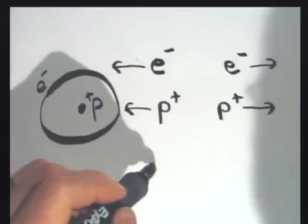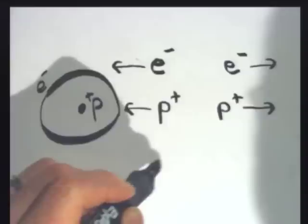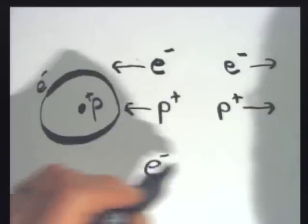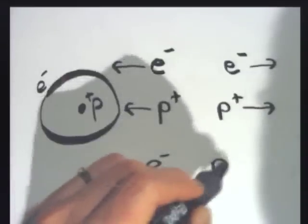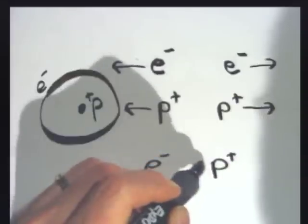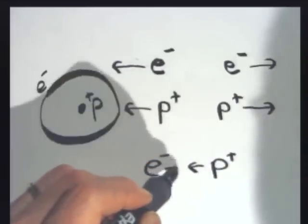And opposites attract. So if I've got an electron, a negative charge, and a positive charge, they'll go toward each other. They'll attract.